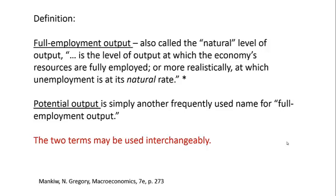Starting with a definition borrowed from Greg Mankiew's textbook: full employment output is also called the natural level of output. It is the level of output at which the economy's resources are fully employed, or more realistically, at which unemployment is at its natural rate. Potential output is simply another frequently used term for full employment output — these two terms may be used interchangeably.